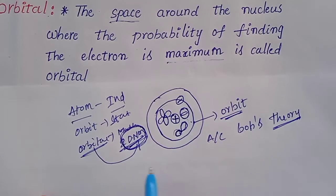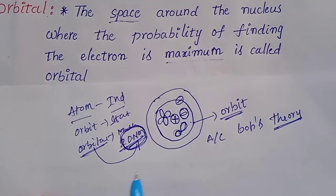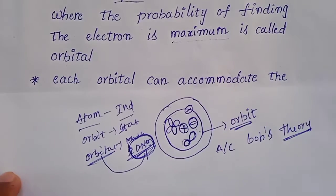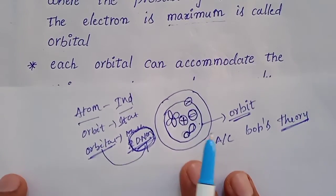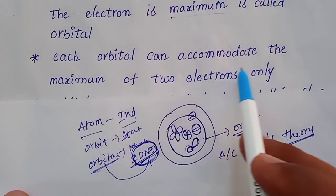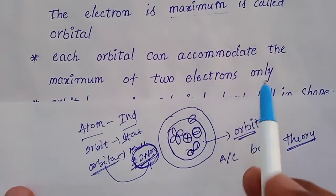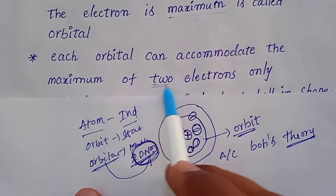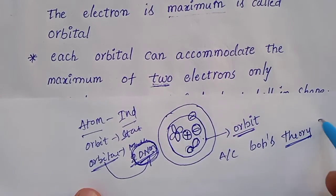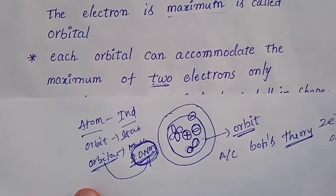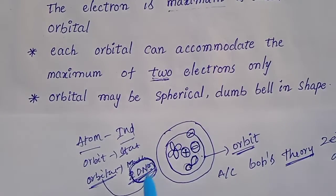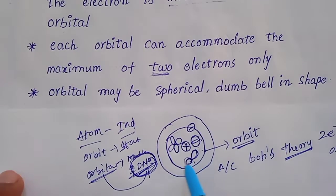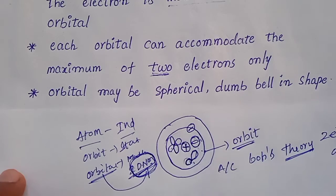Students, if you understand well, post your doubt in the comment section. Each orbital can accommodate a maximum of two electrons only. Also, orbitals may be of different shapes — they may be spherical shape, dumbbell shape, or double dumbbell shape.